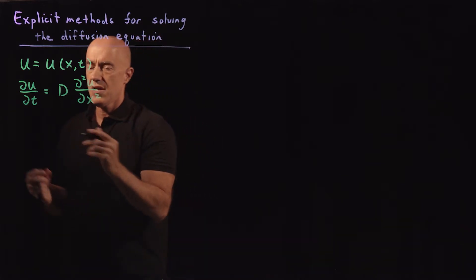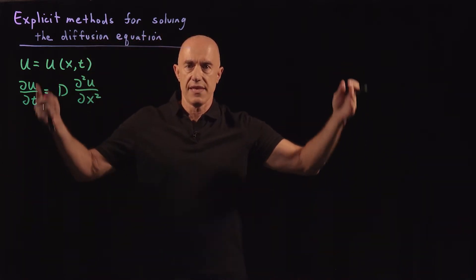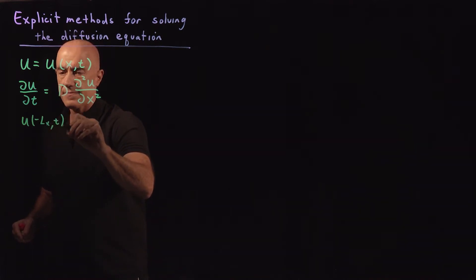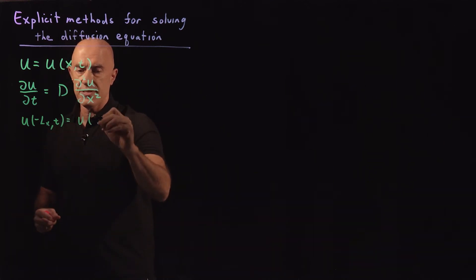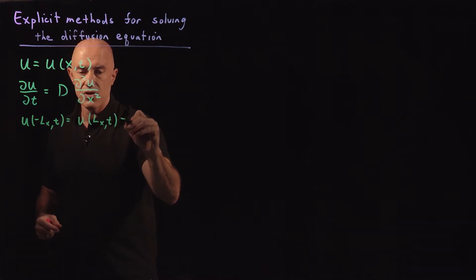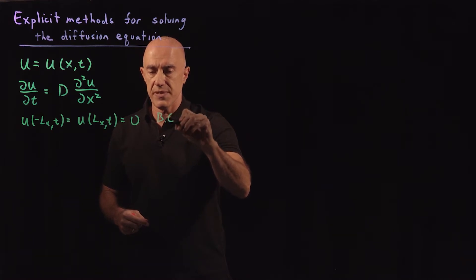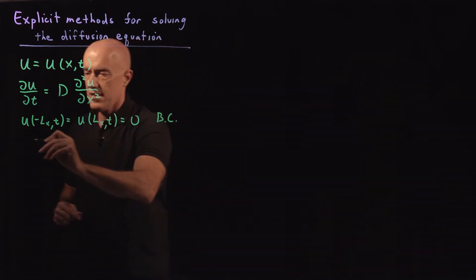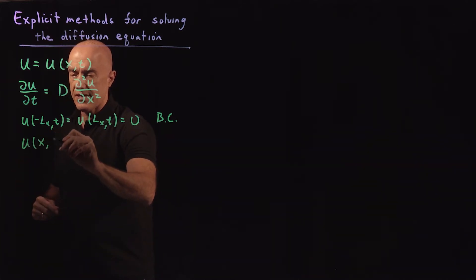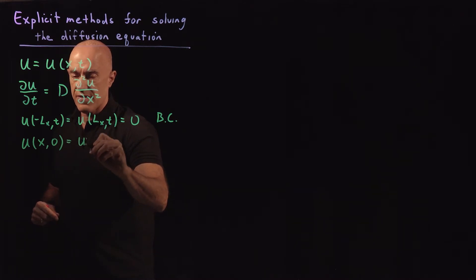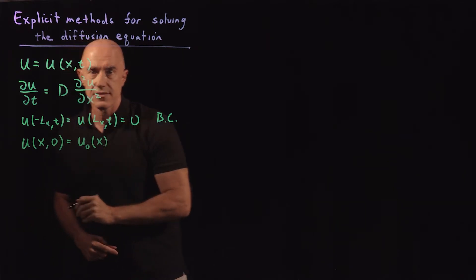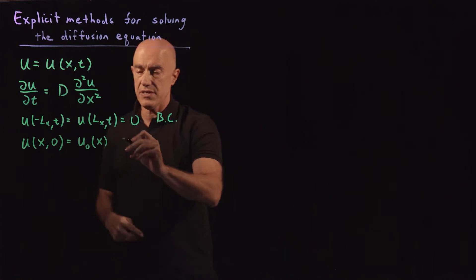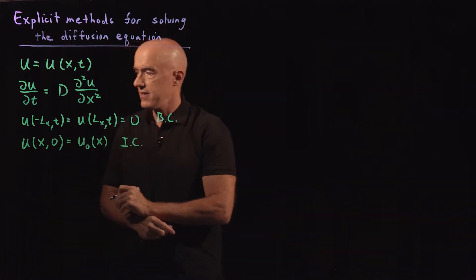We have certain boundary conditions — we specify the value of u at the ends of the spatial domain. We have u at minus Lx for all time set equal to zero, and the value of u at Lx for all time also equal to zero. These are the boundary conditions. In an initial value problem, we also have initial conditions: u for all x at t equals zero is some given function of x, which I'll call u-naught of x. That specifies our diffusion equation problem — the PDE, the boundary condition, and the initial condition.